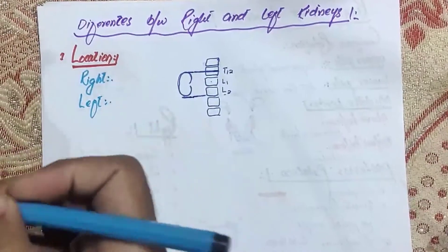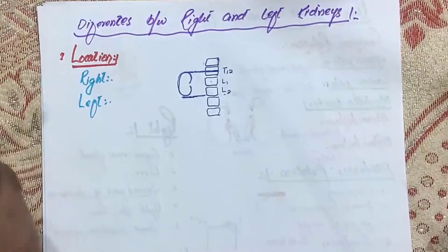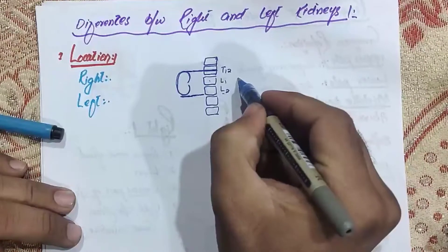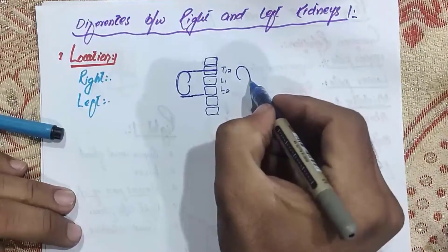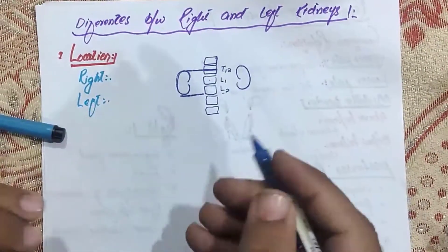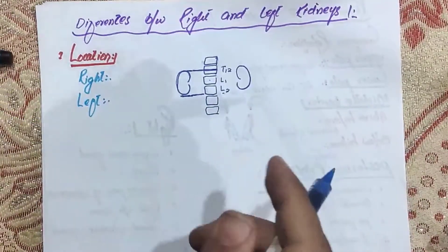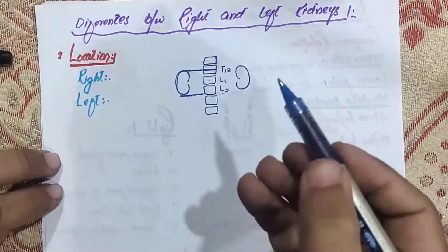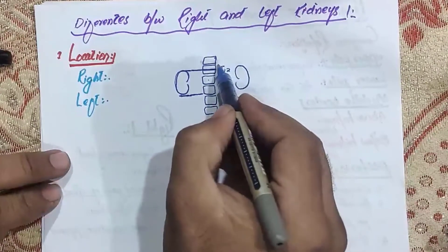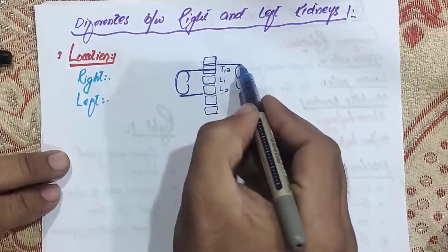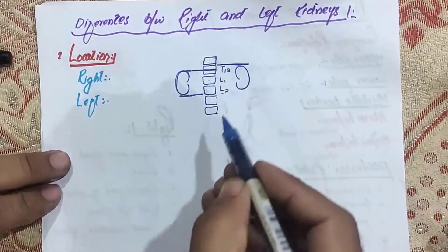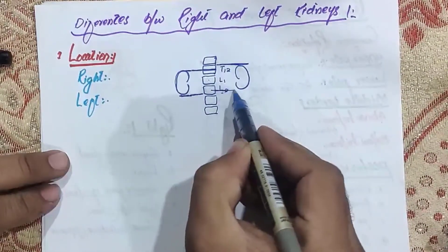The location of the left kidney is something different. The left kidney's upper pole begins at the upper part of T12, which is slightly higher than the right kidney, making the left kidney positioned a little bit higher overall.